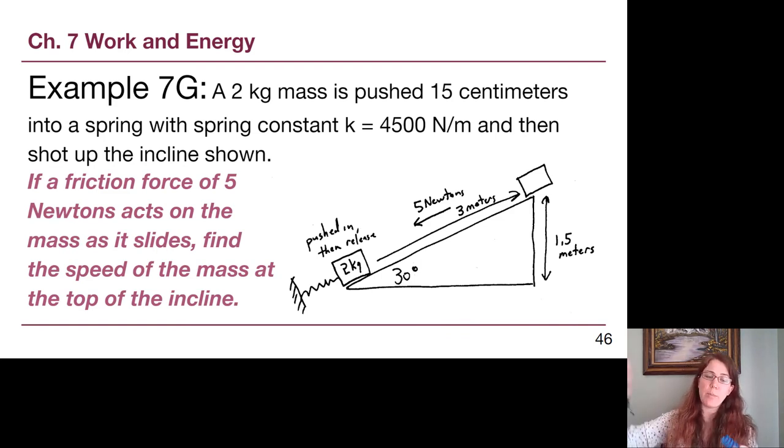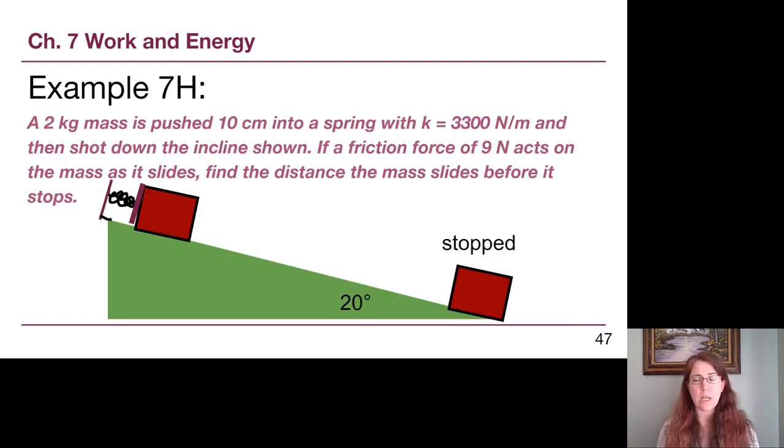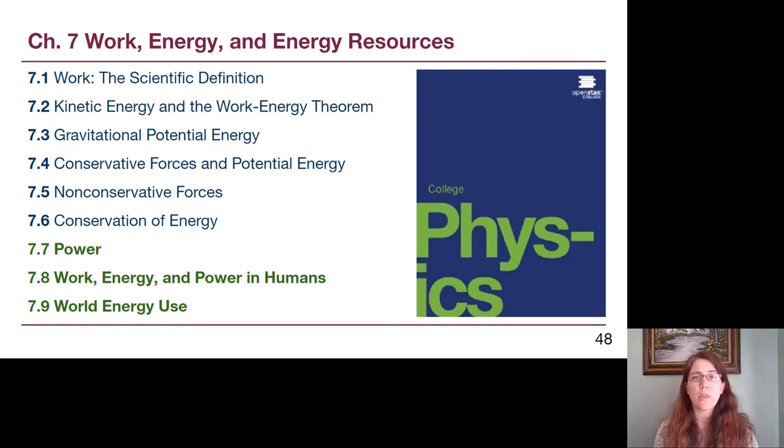The next one, we have a ramp where at the bottom of the ramp, we have pushed that thing into the spring. We let it go shooting forward up the ramp. We want to find how fast it's going at the top of that ramp. The third separate example video is we have a spring at the top of a ramp. We squash something into it and we let it go down the ramp as friction is slowing it down. We want to find how far it's able to go before it stops moving.